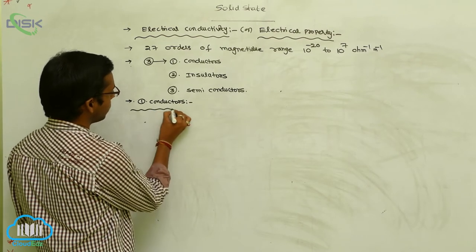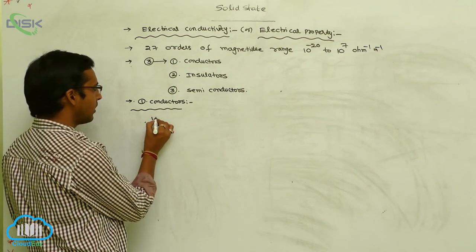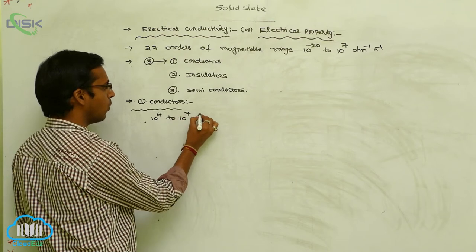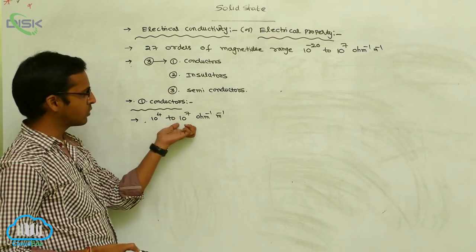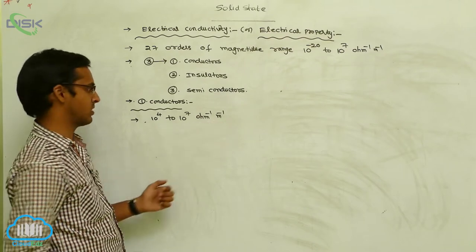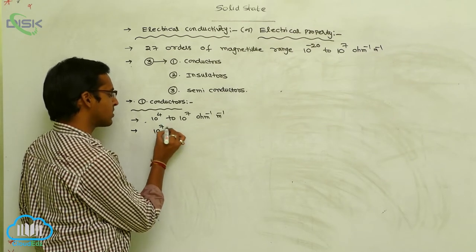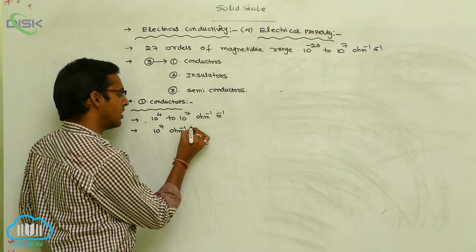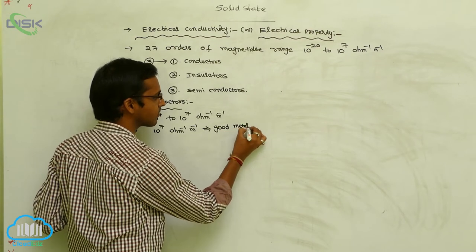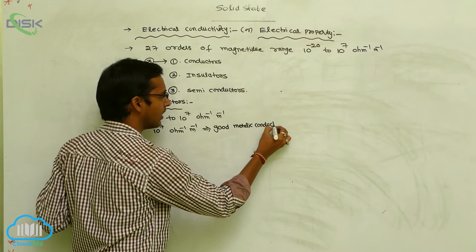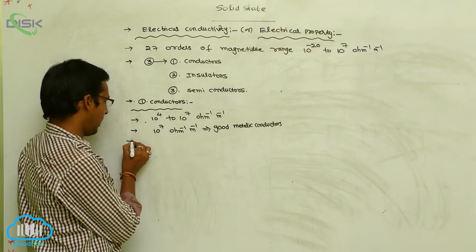For conductors, the conductivity range is 10⁴ to 10⁷ Ohm⁻¹ meter⁻¹. If a metallic conductor has a conductivity range of 10⁷ Ohm⁻¹ meter⁻¹, such conductors are called good conductors or good metallic conductors.